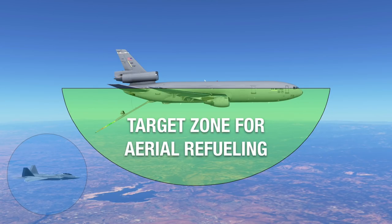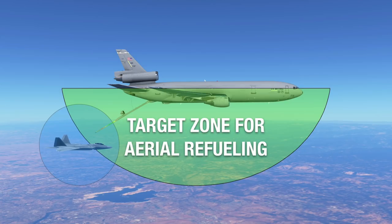Basically, this is just a visual that you can look at. You have the target zone for aerial refueling around the tanker, and then you have a bubble around the aircraft that you're flying and wanting to fill up. As long as you bring those two within the same vicinity — as you can see here — you don't have to make contact or connect to the nozzle. As long as your bubble is within that zone of the tanker, you will be able to refuel.